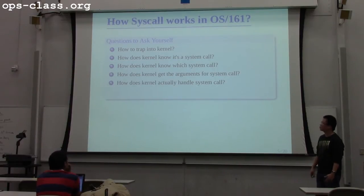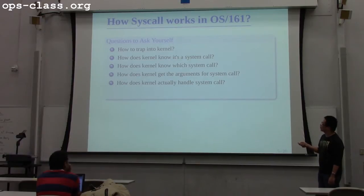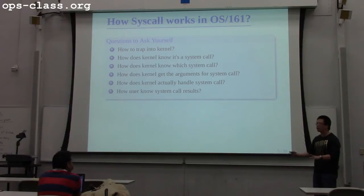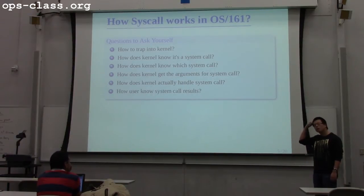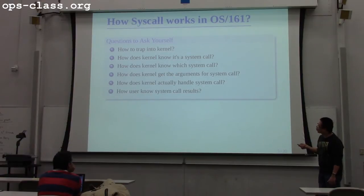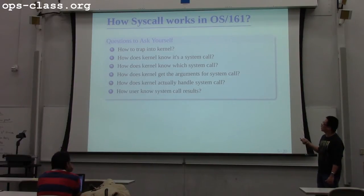How does the kernel actually handle the syscall? This is the part you worry about in this assignment — you do the work that handles the syscall. And after you handle your syscall, how does the user know that the syscall is done? The user wants to open a file; you open it — but how do you return the file descriptor to user space? These are all the problems you need to consider. Fortunately, OS/161 has already taken care of most of this. You only need to do one step of this in the assignment, but it's better to understand how the other parts work.